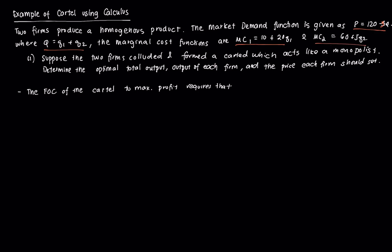The question is, suppose the two firms decided to form a cartel in a manner that they want to act like a singular monopolist. We would need to determine the optimal total output of the cartel, the output for each member of the cartel, and the price at which each member of the cartel should price their output at.